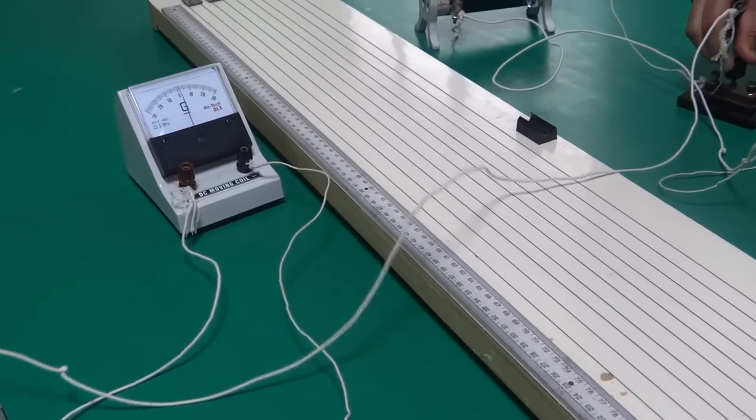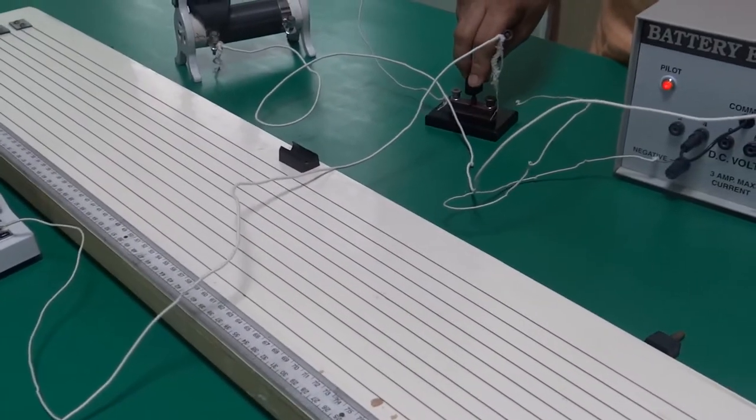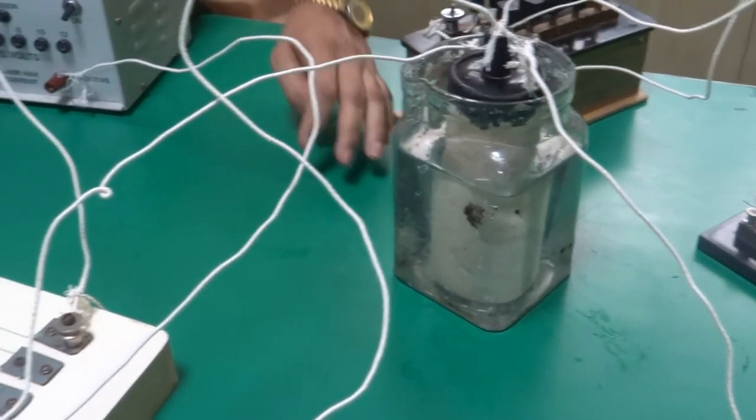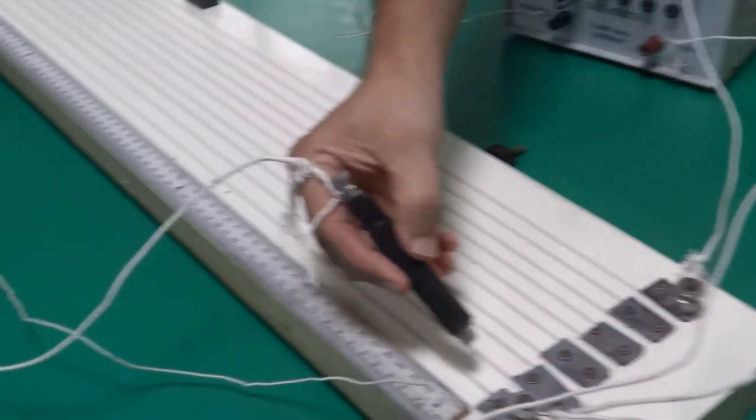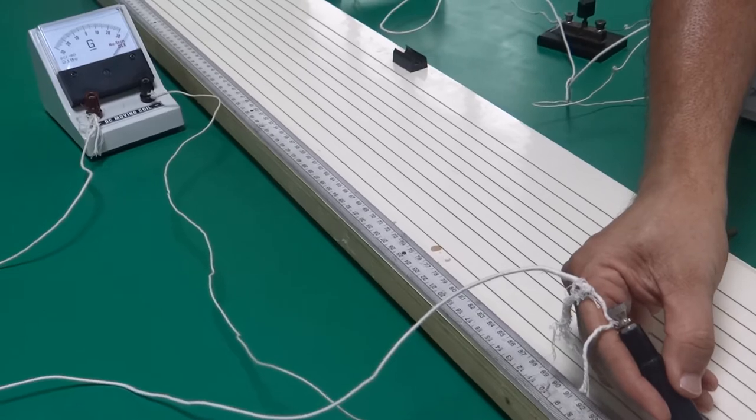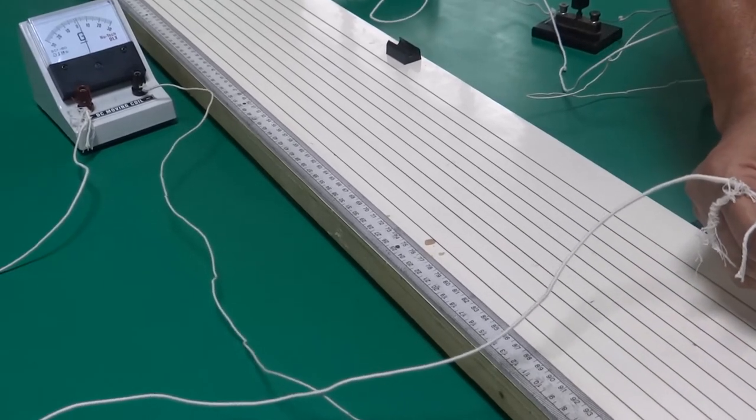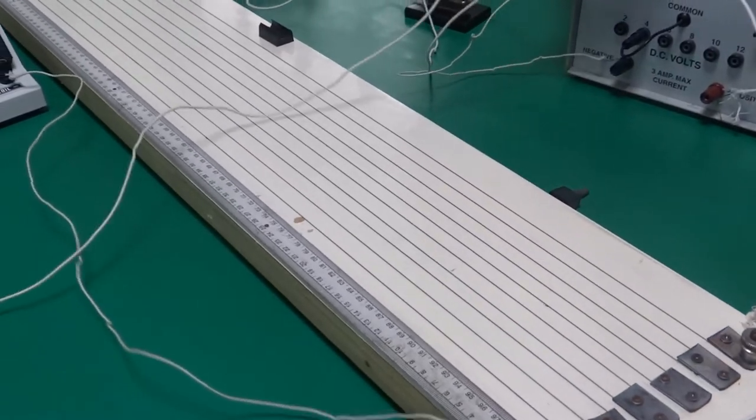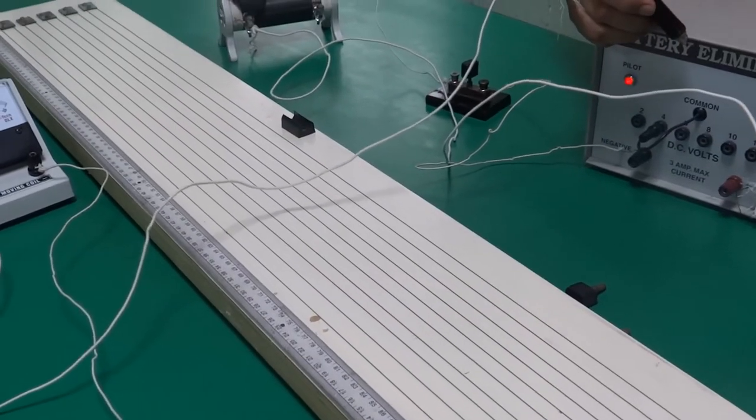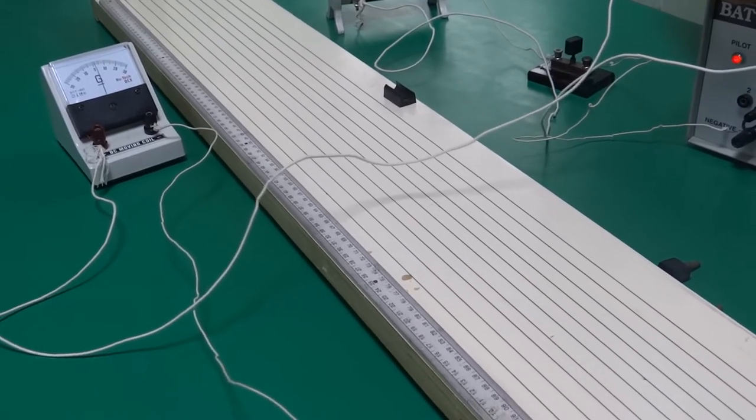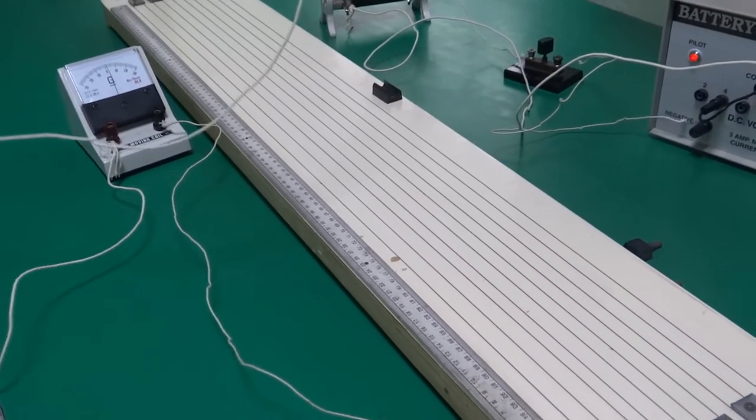So first I connect this main circuit key here. This key is open. In the first step, this key is open so the potentiometer circuit will remain safe. We connect jockey to the positive terminal and check where it deflects. It deflects to the right. Then near the negative terminal it deflects to the right. Once it deflects to the left, means the deflection is in opposite direction, it means your circuit is working perfectly.